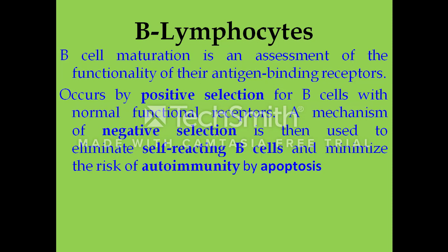As seen in clonal selection theory, a few cells show immune reactions against self molecules and are removed by negative selection. Negative selection of self-reacting B cells involves elimination of these self-reactive B cells by apoptosis, or by editing or modification of the receptor so that they are no longer self-reactive.